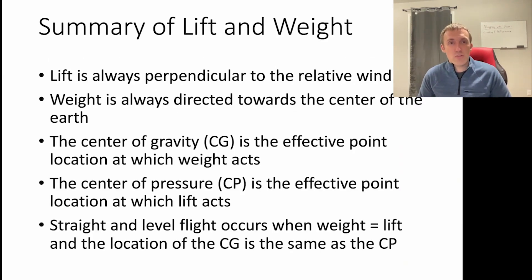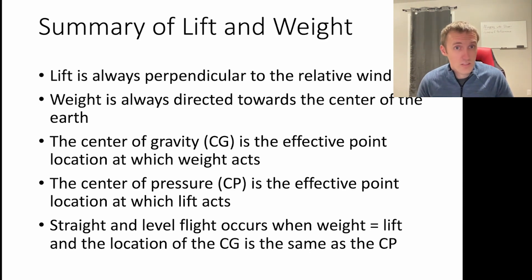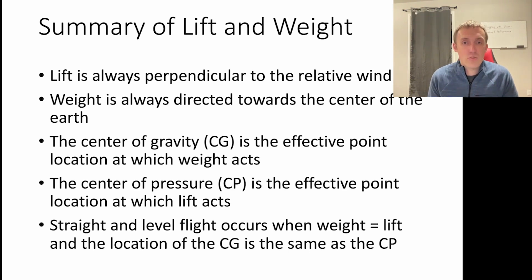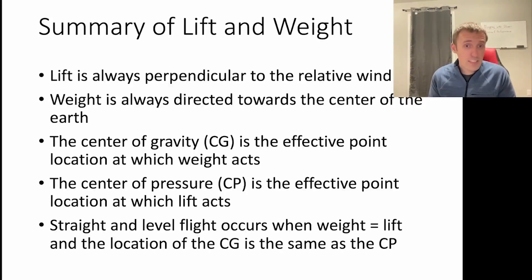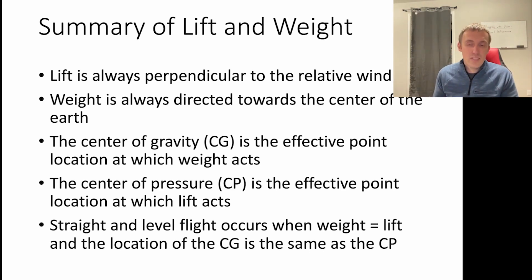To summarize: lift is always perpendicular to the relative wind — that's the force moving the aircraft up. Weight is always directed towards the center of the earth and opposes lift. The center of gravity is the effective point location at which weight acts — the point at which you could balance the plane. The center of pressure is the effective point location at which lift acts. Finally, straight and level flight occurs when weight equals lift and the center of gravity is essentially aligned with the center of pressure, so that lift and weight are exactly counterbalancing each other.